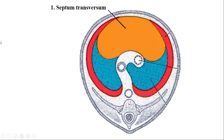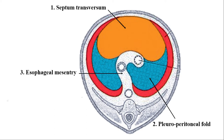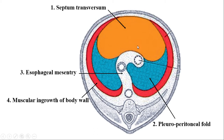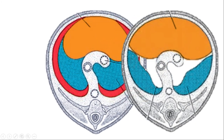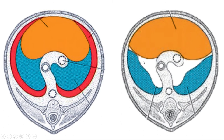The four structures are: septum transversum, pleuroperitoneal folds, dorsal mesentery of the esophagus, and the muscular ingrowth of the body wall. These structures come together and fuse to form a complete diaphragm. If one of these structures does not develop, is absent, or they do not fuse, then a gap or defect remains. In this picture on the right side we can see that gap or defect.